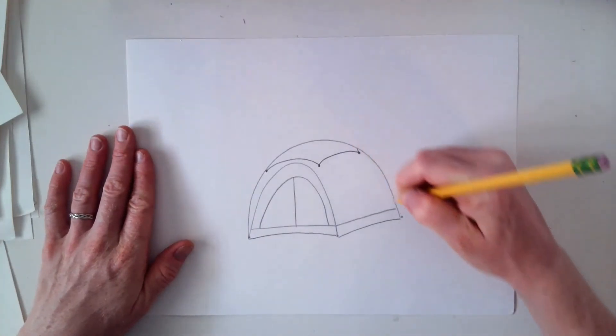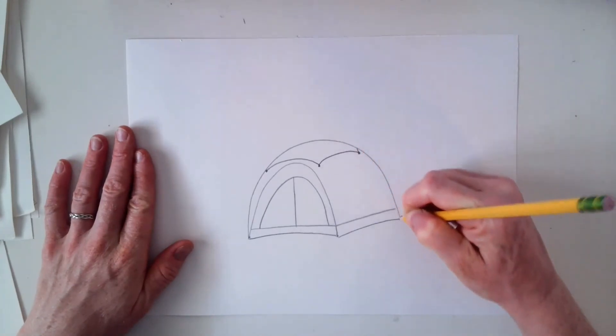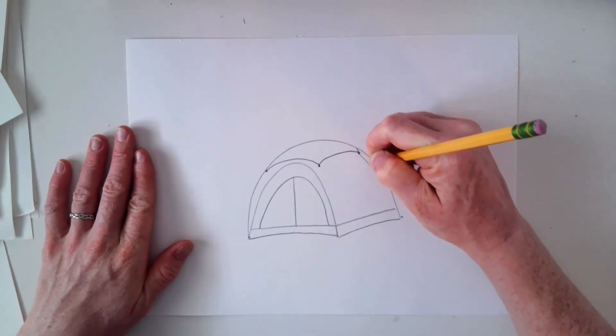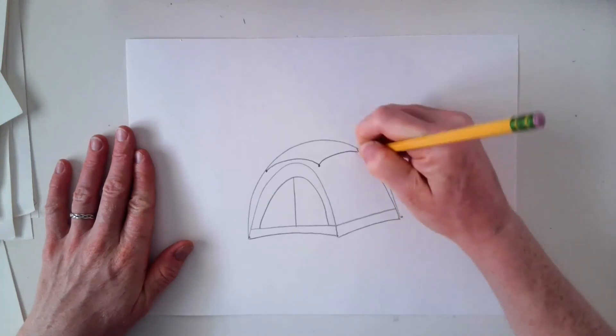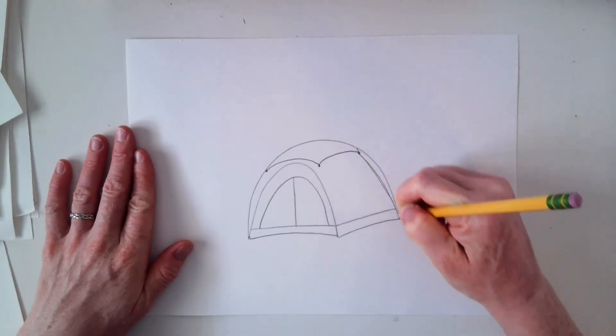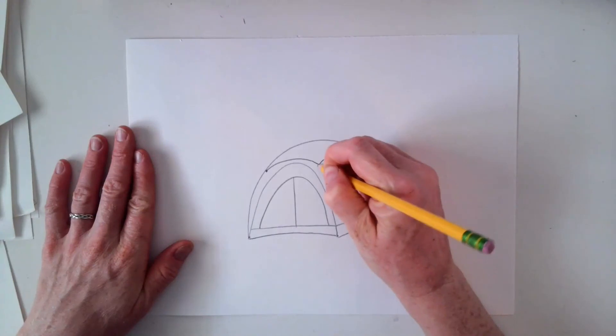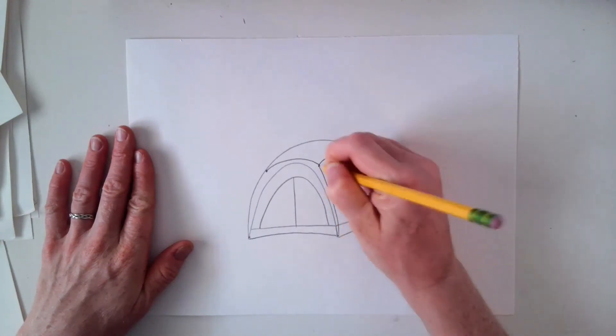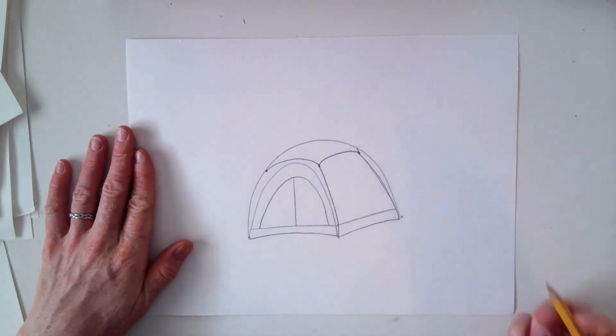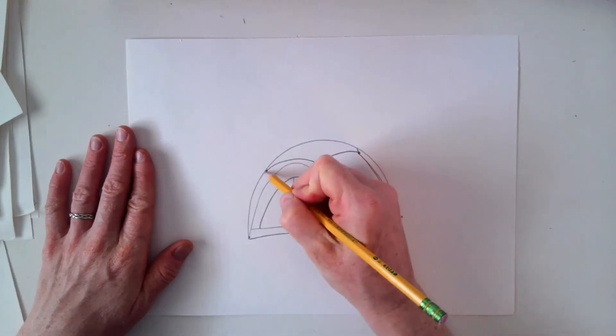These need support, so we're going to draw a line that connects from here down to the bottom. We'll do the same at this corner, and the same at this corner.